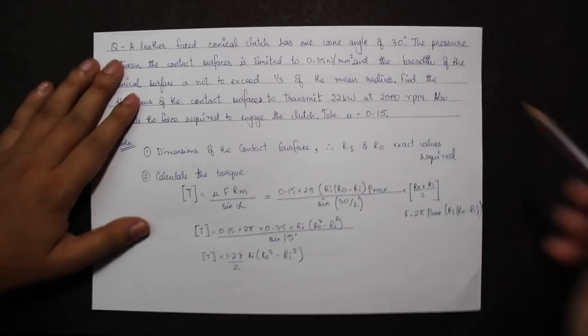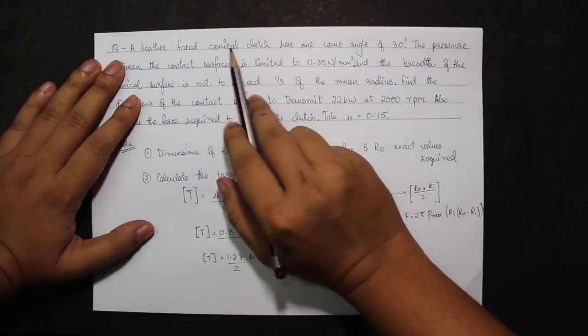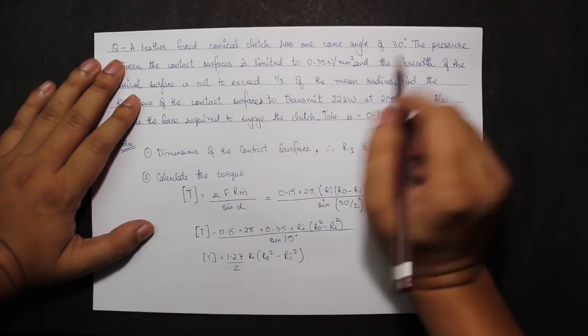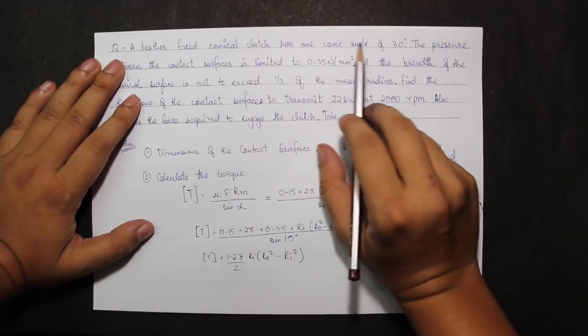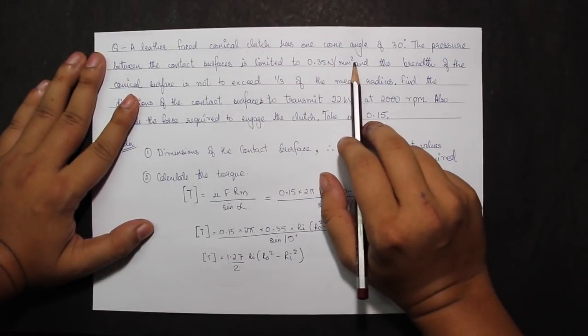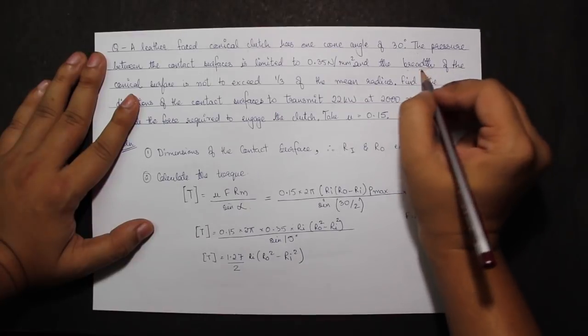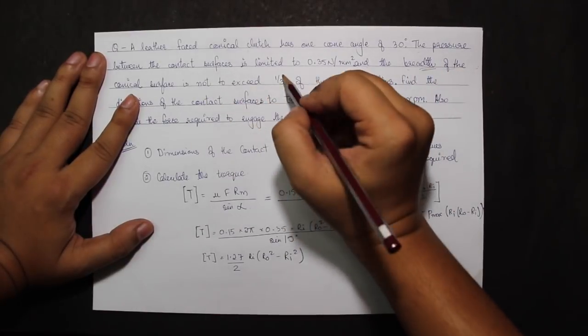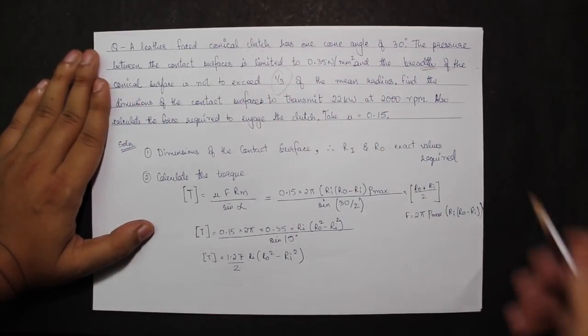Another question I will be telling you in this video is for a conical clutch. The question states a leather-faced conical clutch has one cone angle of 30 degrees. The pressure between the contact surface is limited to 0.35 Nm per mm squared, and the breadth of the conical surface is not to exceed 1 by 3 of the mean radius. This condition has to be kept in mind.